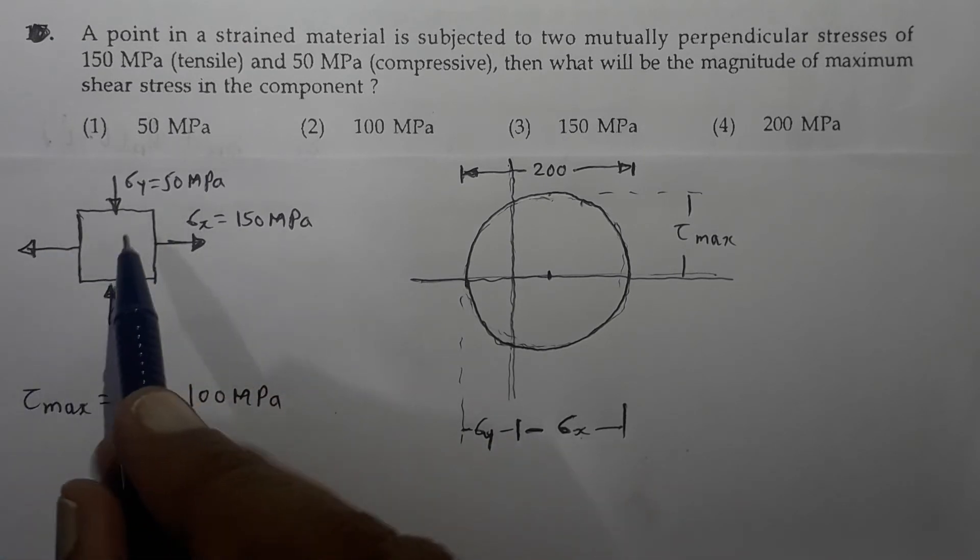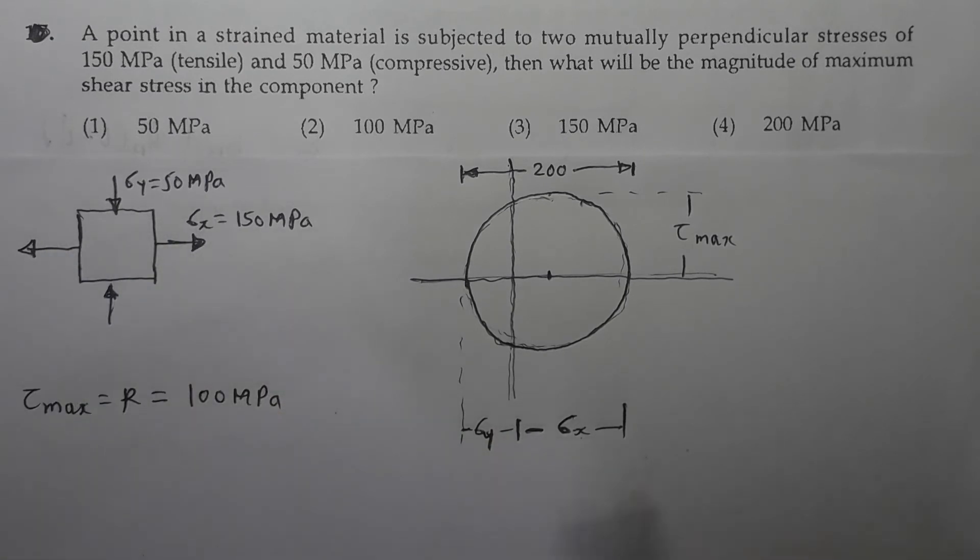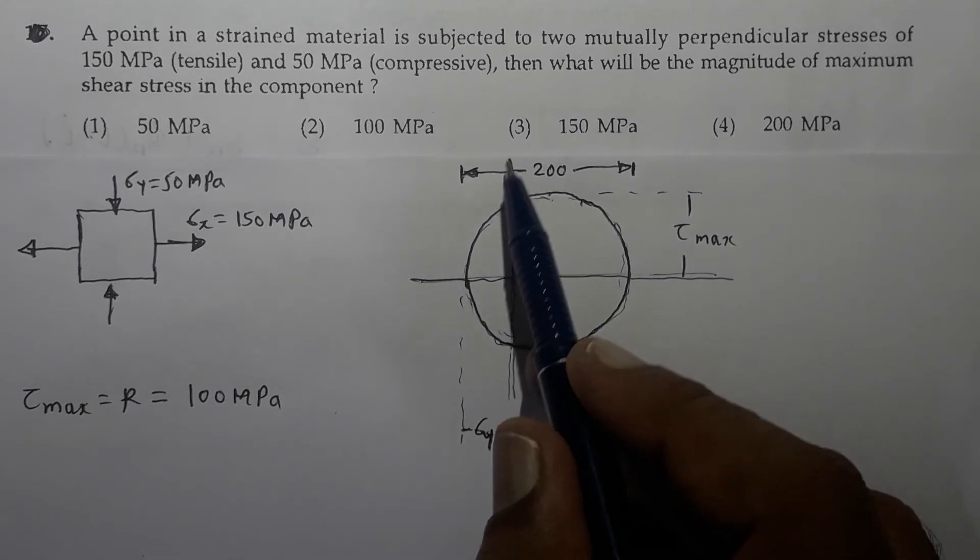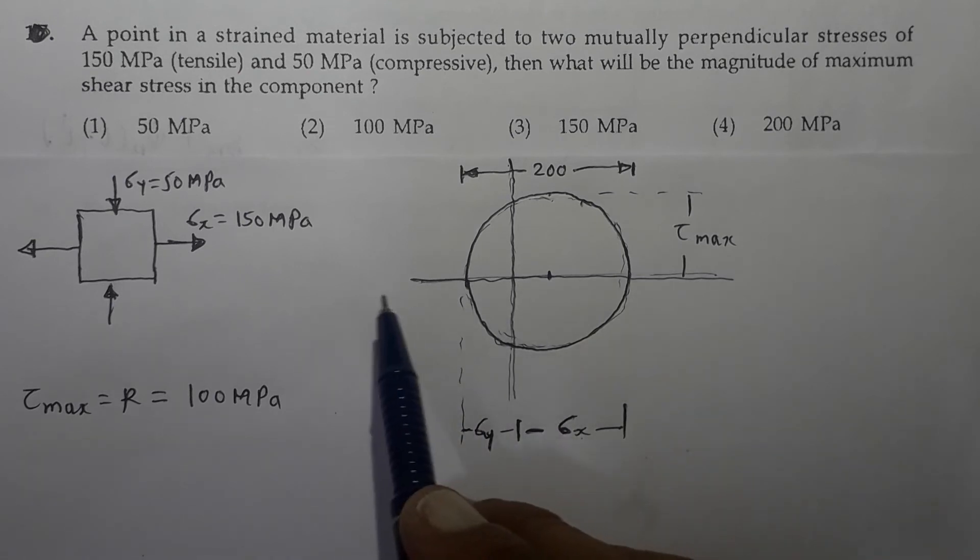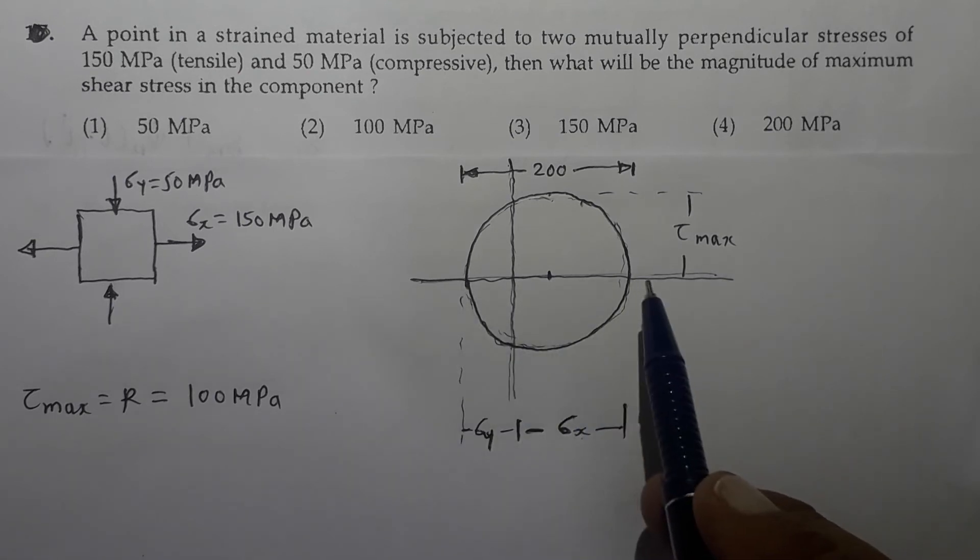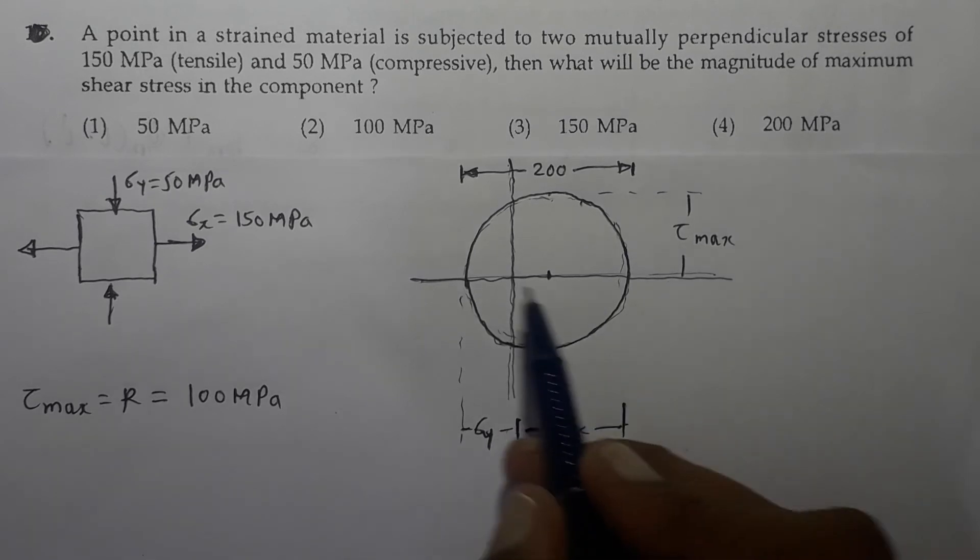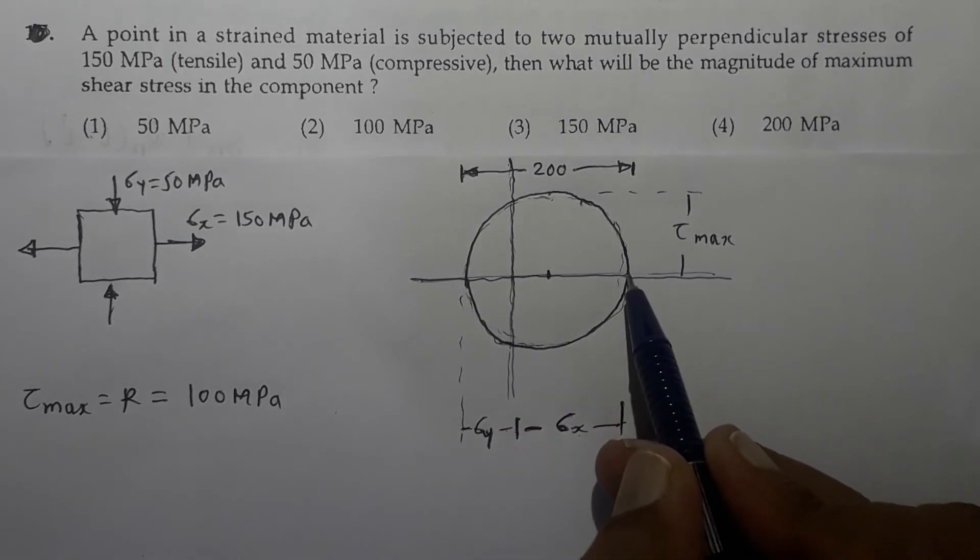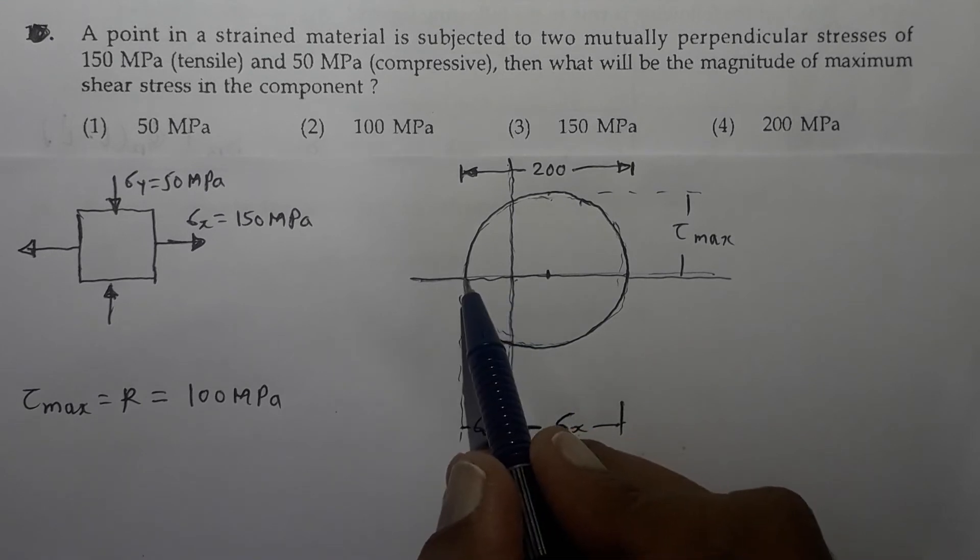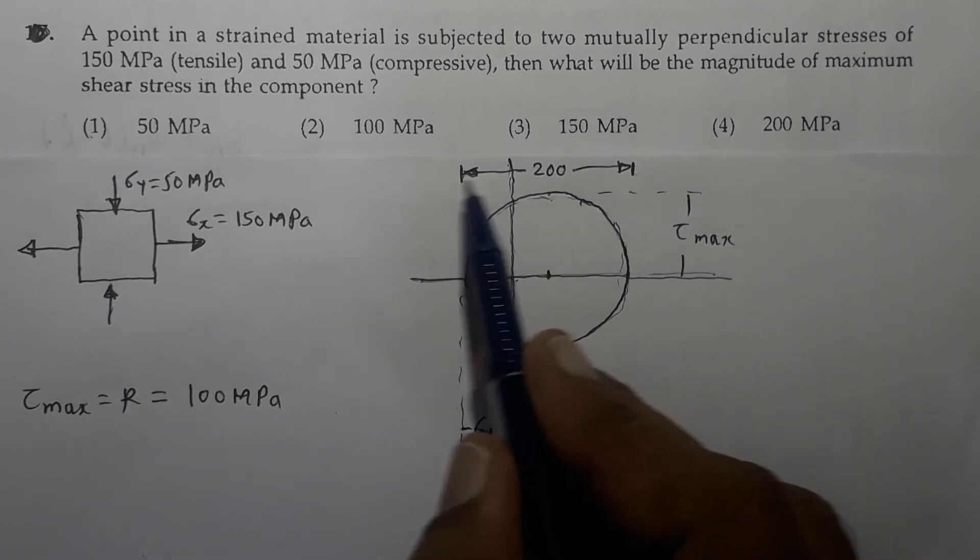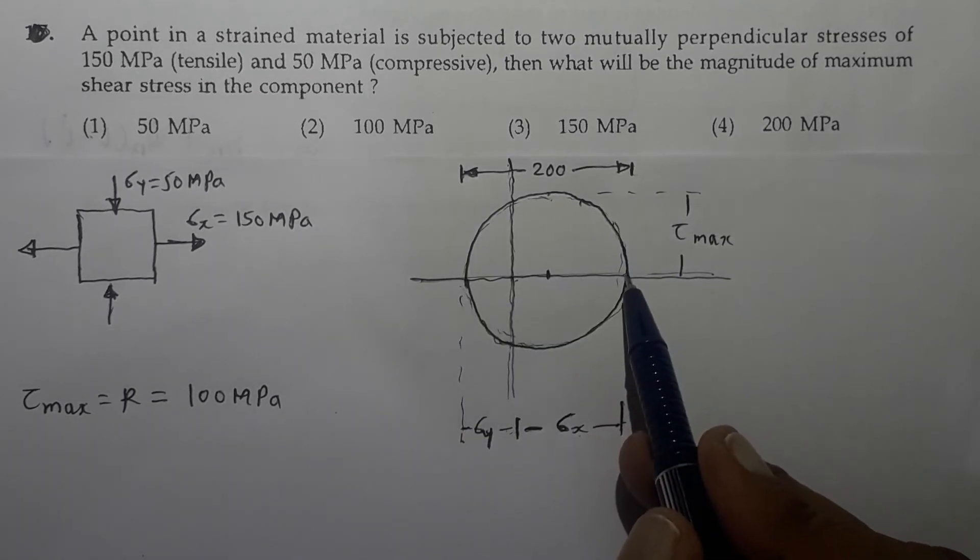Now to get the maximum value of shear stress, I am considering Mohr circle. Let it be X axis and Y axis. We know that the direct stress is to be plotted along X axis. The tensile stress I am treating as positive. So sigma X I am plotting it to the right from the origin till this end. Sigma Y will be on this side. Now sigma X is 150, sigma Y is 50. So this total diameter will be 200 mm for this circle.